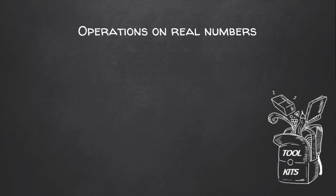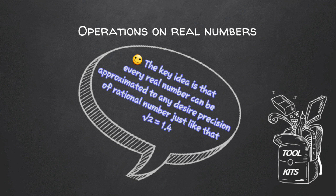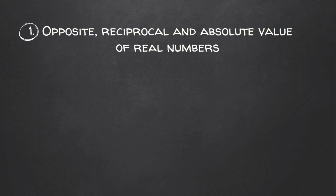When we perform such operations, we prefer to have finite digits after the decimal place, but it is not always possible. The key idea is that every real number can be approximated to any desired position of rational numbers.